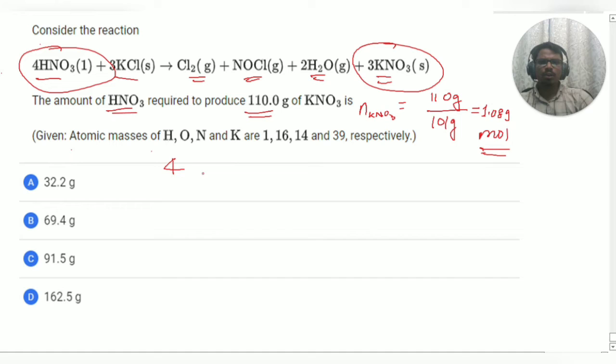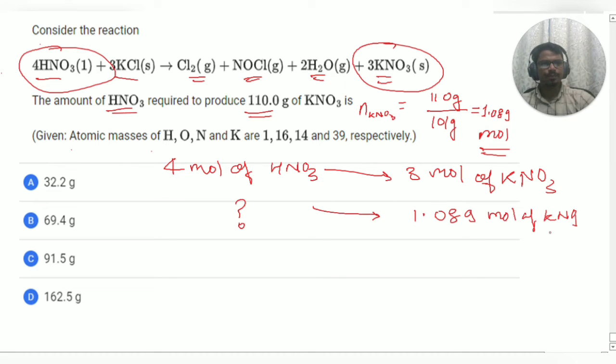So, from here we can see 4 mole of HNO3 producing 3 mole of KNO3, then how many moles of HNO3 will produce 1.089 mole of KNO3.